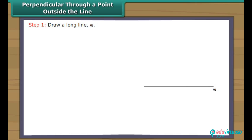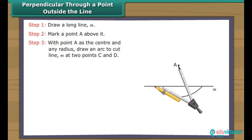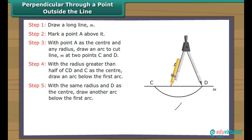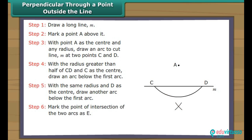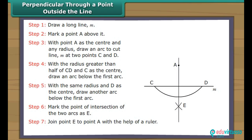Perpendicular through a point outside the line. Draw a long line M. Mark a point A above it. With point A as the centre and any radius, draw an arc to cut line M at two points C and D. With a radius greater than half of CD and C as the centre, draw an arc below the first arc. With the same radius and D as the centre, draw another arc below. Mark the point of intersection of the two arcs as E. Join E to A with the help of a ruler. AE is perpendicular to line M.